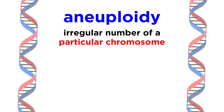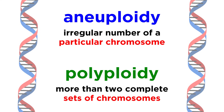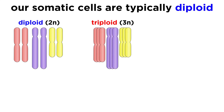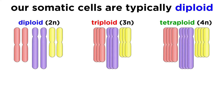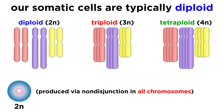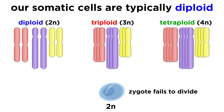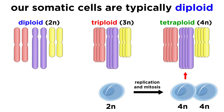Now, unlike aneuploidy, which involves an irregular number of a particular chromosome, organisms can also exhibit polyploidy, which means more than two complete sets of chromosomes. Normally, our cells are diploid, meaning two sets of all 23 chromosomes, or 46 total. But organisms can also exhibit triploidy, or 3N, meaning three sets, or even tetraploidy, or 4N, meaning four sets. These situations can arise if non-disjunction occurs for all chromosomes to produce a diploid egg, which is subsequently fertilized, or if a diploid zygote replicates all its chromosomes and then fails to divide, which after another round of replication and mitosis will yield a tetraploid embryo.